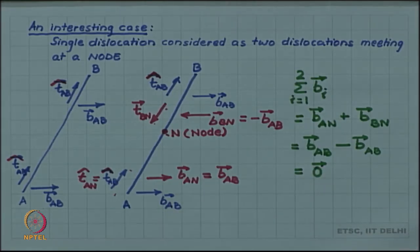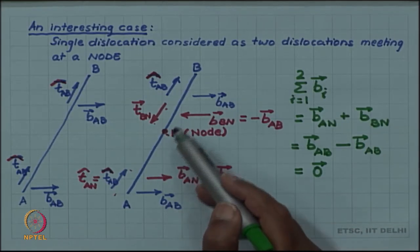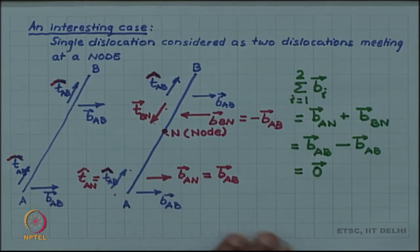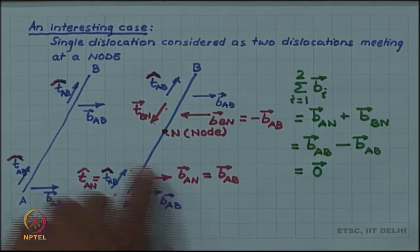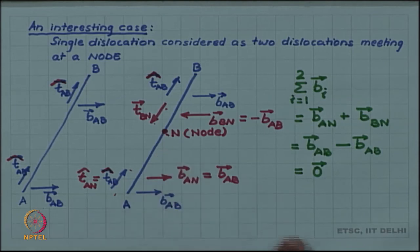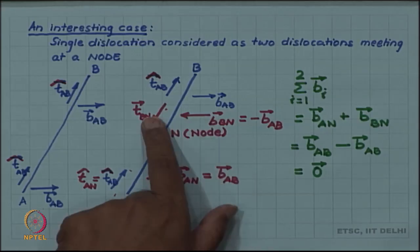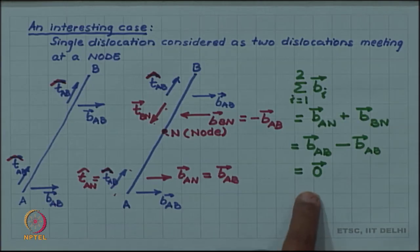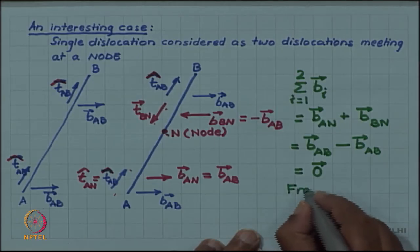So it is possible to consider any point of a single dislocation as a node at which two separate dislocations are meeting. This exercise summarizes important conventions: the tangent vector should point towards the node; if the T vector flips then the B vector also flips; and the sum of the Burgers vectors at the node should be zero — which is Frank's rule.